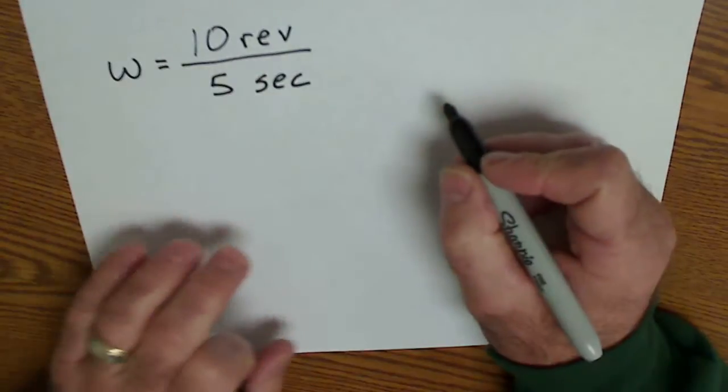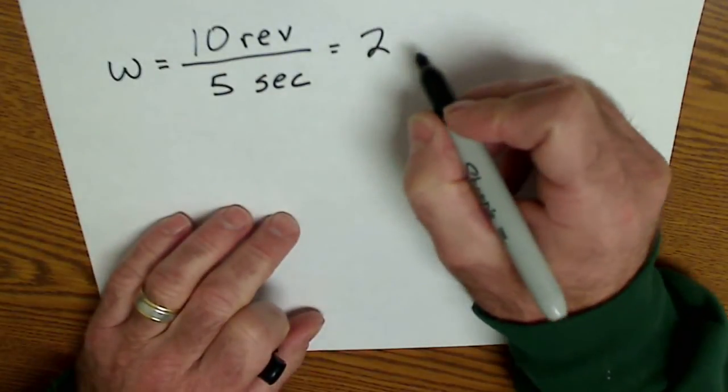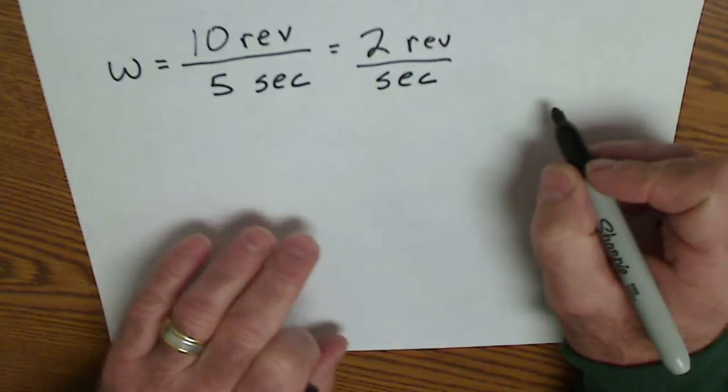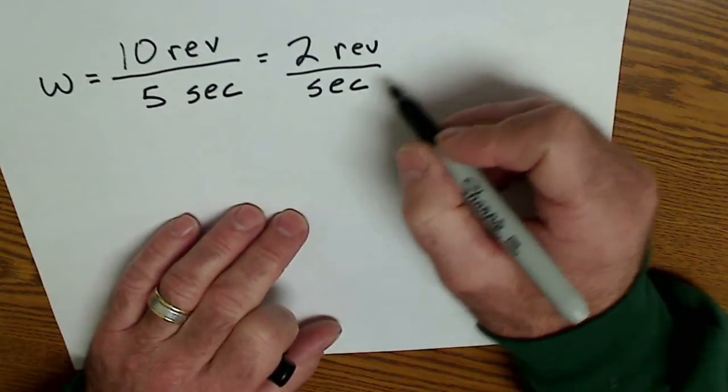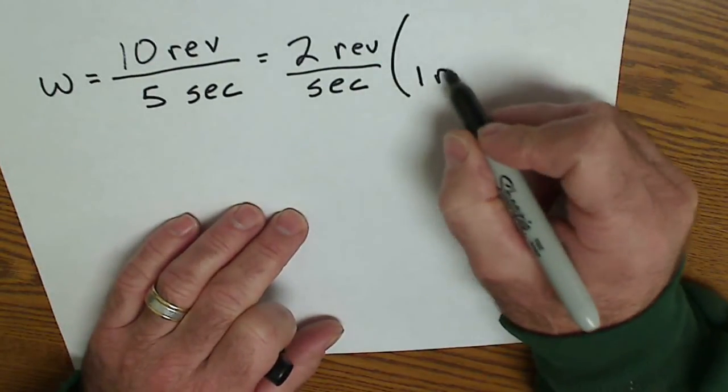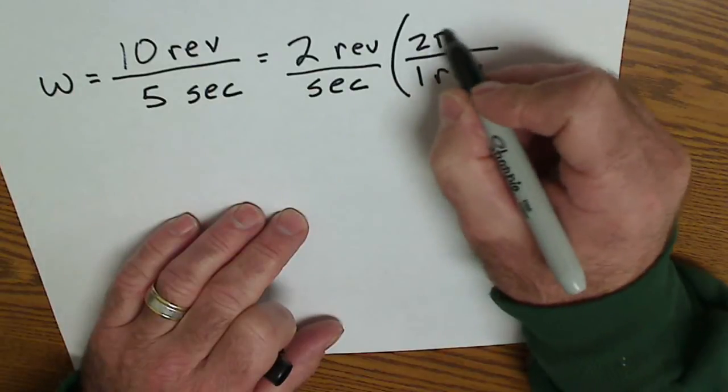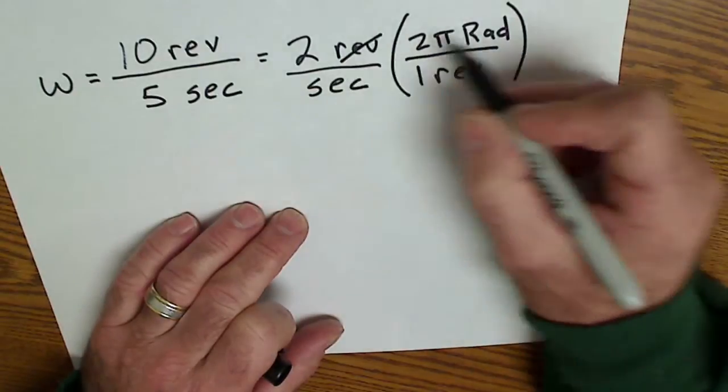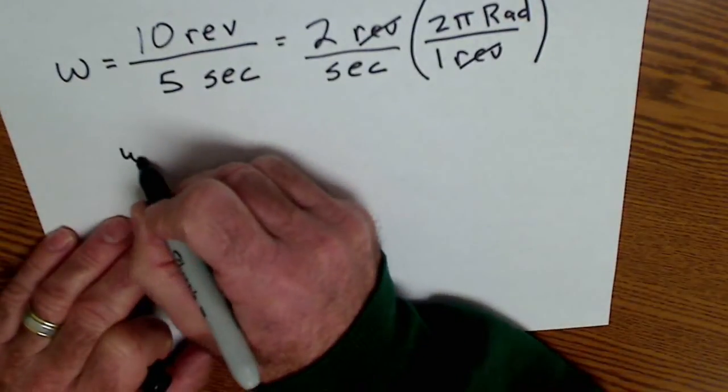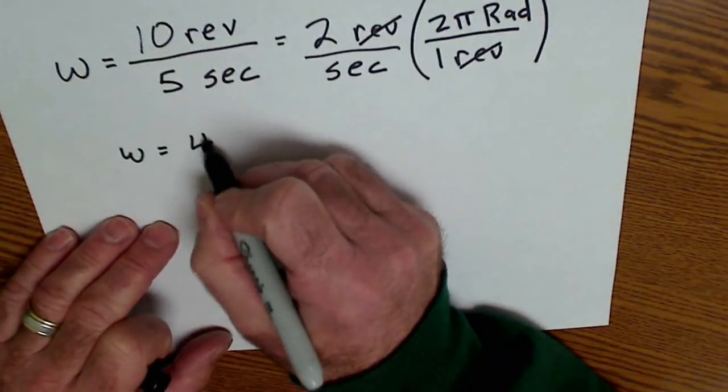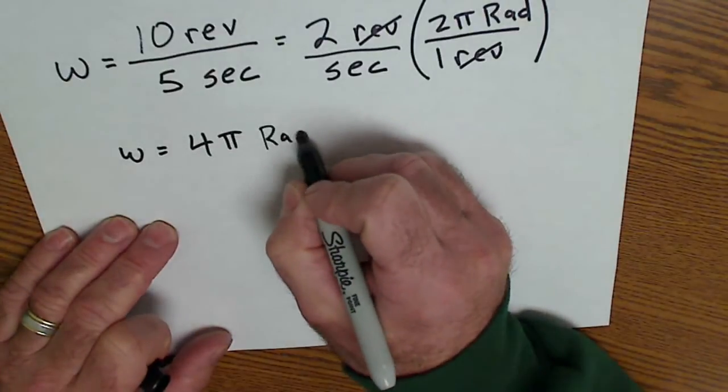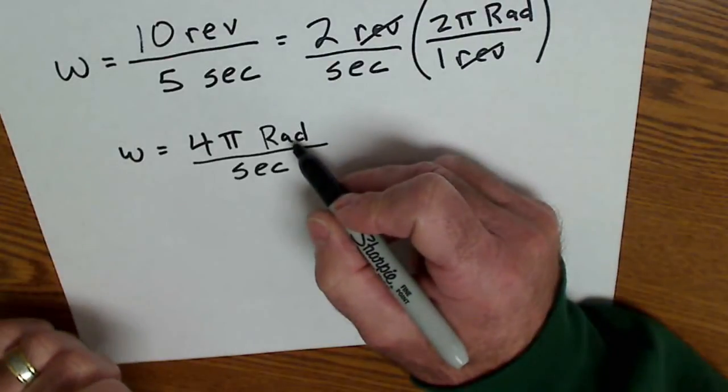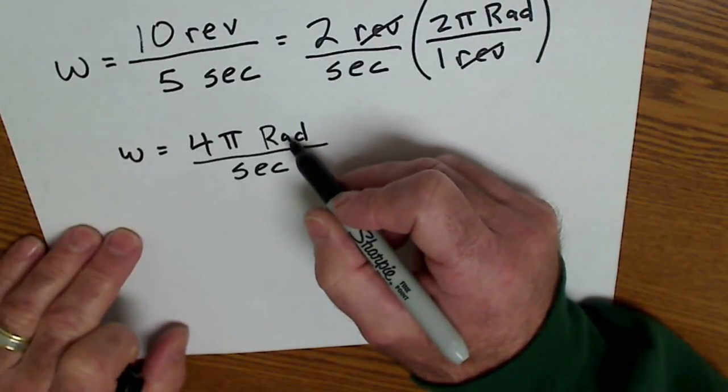So this is an angular velocity because it's rotation over time. So I have angular velocity, which is equal to two revolutions per second. And then I'm going to convert it into radian measure. One revolution is equal to two pi radians. Revolutions will cancel. And that will give me an angular velocity of four pi radians per second. Radians are actually unitless, but we keep it there as a placeholder.